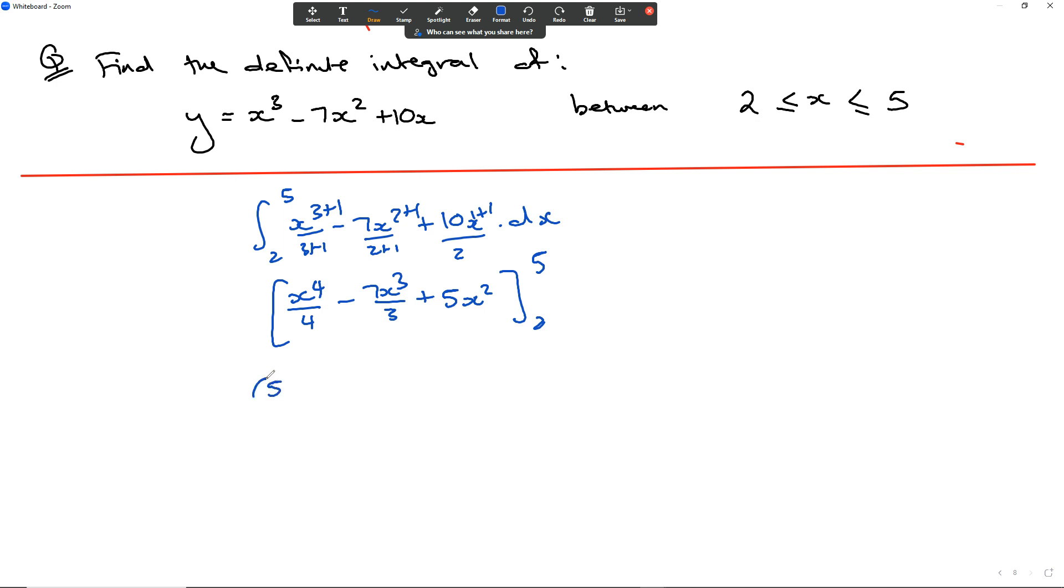We then go 5 to the power of 4 over 4, minus 7 times 5 to the power of 3 over 3, plus 5 times 5 squared. And we take that and subtract our starting point which is 2. So 2 to the power of 4 over 4, minus 7 times 2 to the power of 3 over 3, plus 5 times 2 squared.